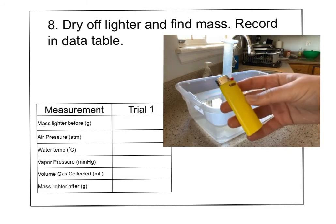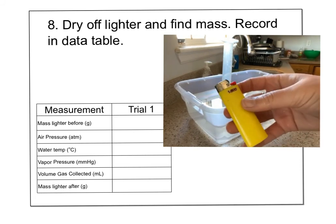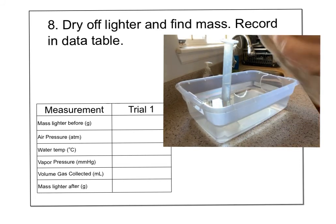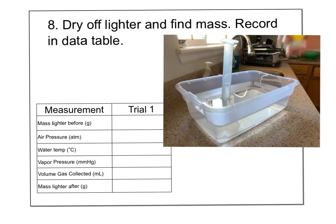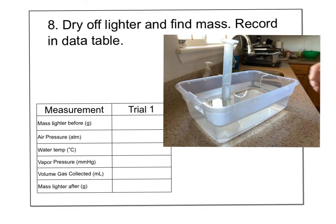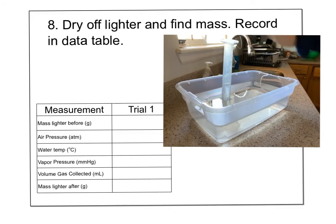Now I need to find the mass of the lighter, but it's dripping wet with lots of crevices. I'm going to dry it carefully with a towel — without pushing the button so we don't lose more gas — and shake it to get as much water out of all the crevices as possible, since water droplets could mess up our measurement.